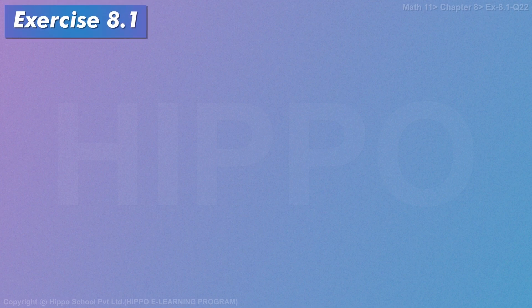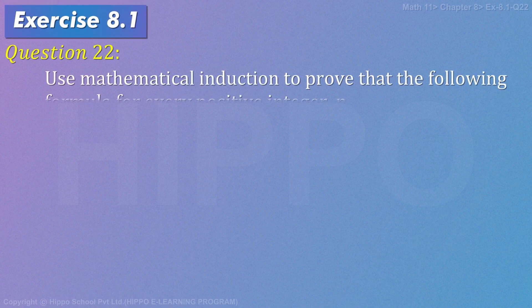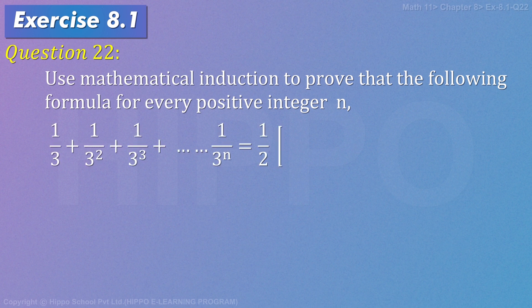Exercise 8.1, Question 22. Use mathematical induction to prove that the following formula holds for every positive integer n: 1/3 + 1/3² + 1/3³ + ... + (1/3)ⁿ = (1/2)[1 - (1/3)ⁿ].